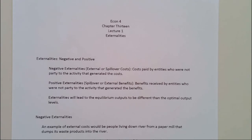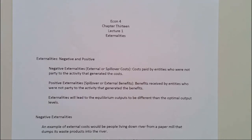Another way for the market to fail is through monopolies or monopoly power, where we saw a deadweight loss when output is reduced and the price is increased. And now we have another way for the market to fail — with externalities and public goods. The first one we're going to look at are externalities, which can cause market failure in two different ways.